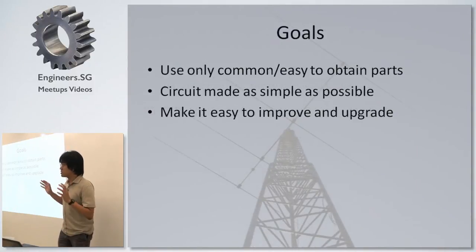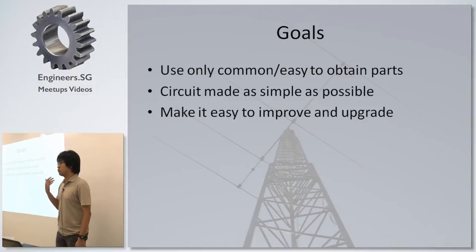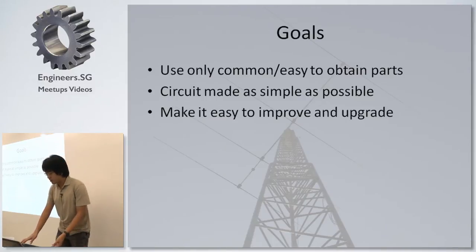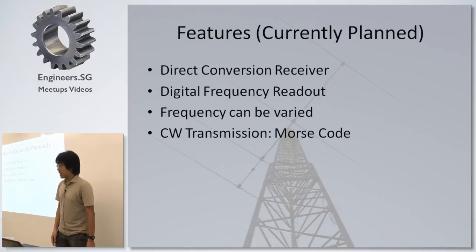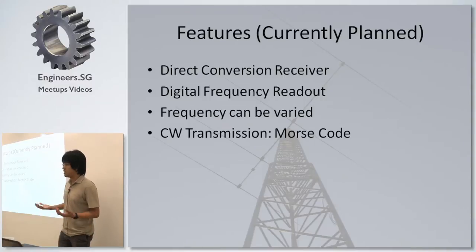The goals for my transceiver here is that I want to use only the most common and easy to obtain parts, like 2N2222s and such, or to make the circuit as simple as possible and make it easy to improve and upgrade. The receiver end is a direct conversion receiver, and I want to have things like digital frequency without variable frequency and just simple Morse code transmission for now.